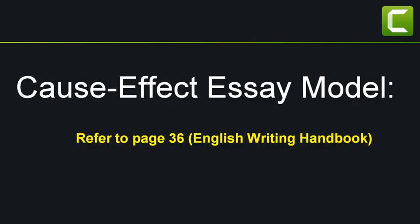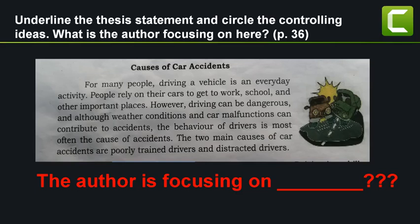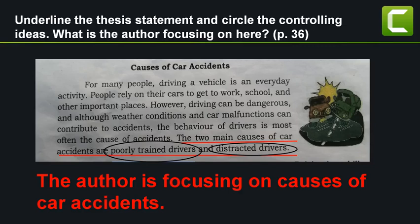Let's read the cause-effect essay model. Please refer to page 36 in your English writing handbook. Stop the video and read the model. Underline the thesis statement and circle the controlling idea. The thesis statement is the last sentence in the introduction: 'The two main causes of car accidents are poorly trained drivers and distracted drivers.' The controlling ideas are poorly trained drivers and distracted drivers. The writer is focusing on the causes of car accidents.